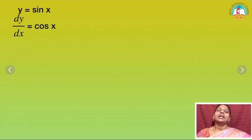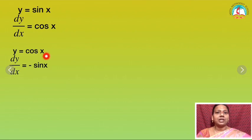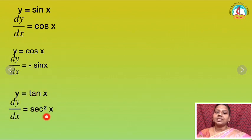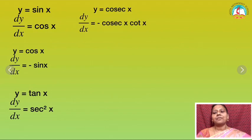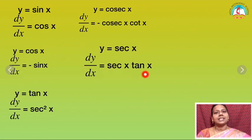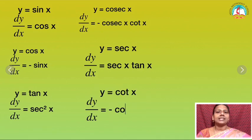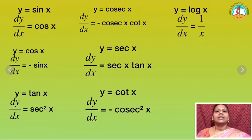Now let me do some other differentiations for trigonometric values — you should practice these. y equal to sin x: differentiation dy by dx is cos x. y equal to cos x: differentiation is minus sin x. y equal to tan x: differentiation is secant square x. y equal to cosecant x: dy by dx is minus cosecant x cot x. y equal to secant x: differentiation is secant x tan x. y equal to cot x: dy by dx is minus cosecant square x. And if y equal to logarithm, then the differentiation is 1 divided by x.